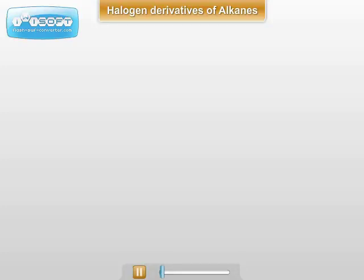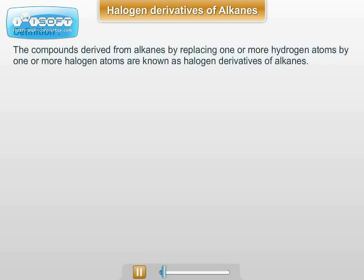Halogen Derivatives of Alkanes. Definition: The compounds derived from alkanes by replacing one or more hydrogen atoms by one or more halogen atoms are known as Halogen Derivatives of Alkanes.